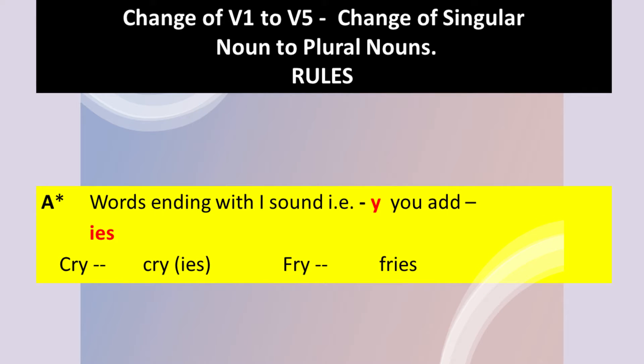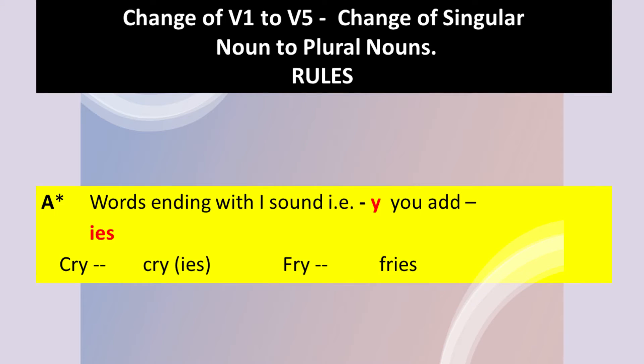How do you change? Rule number one: whenever there is a word which ends with Y, Y is a vowel sound — it is a semi-vowel sound, joh I sound hota hai. Lekin, Y ke aage consonant hona chahiye. Agar Y ke aage vowel hoga, to aap change nahi kar sakte. This you have to keep in mind. Jaise, mein ne bola 'cry' — toh Y se pehle consonant kya hai?